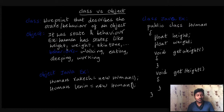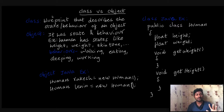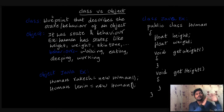If you want to create this object, then you need a class. If you want to create a human object, then you create a human class.